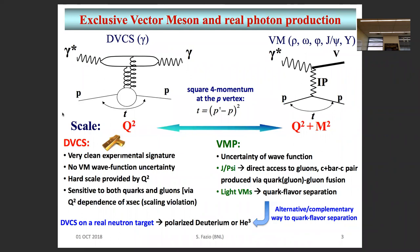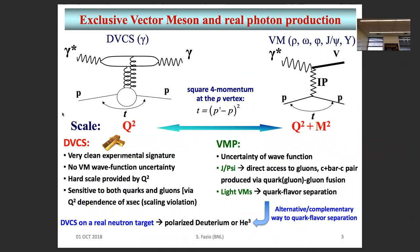We have discussed this many times today. Just to set the stage: we can consider exclusive processes to extract GPDs. DVCS is rightfully called the golden process because you can, by varying Q-squared, access evolution both for quarks, and you don't have complications due to lack of knowledge of vector meson wave functions. Nevertheless, it's also important to mention meson production. With light mesons you can separate quark flavors, and with J/psi — a higher mass meson produced in cc-bar and quark-gluon-gluon fusion — you can access the gluons directly. This is a very powerful mechanism combined with DVCS.